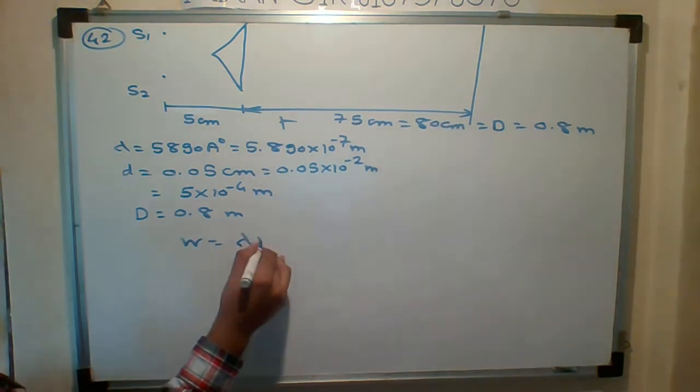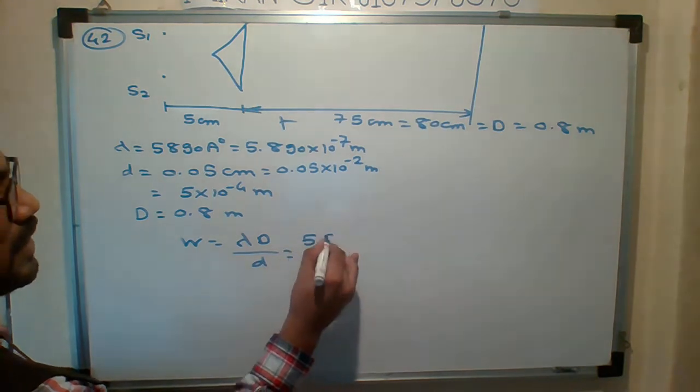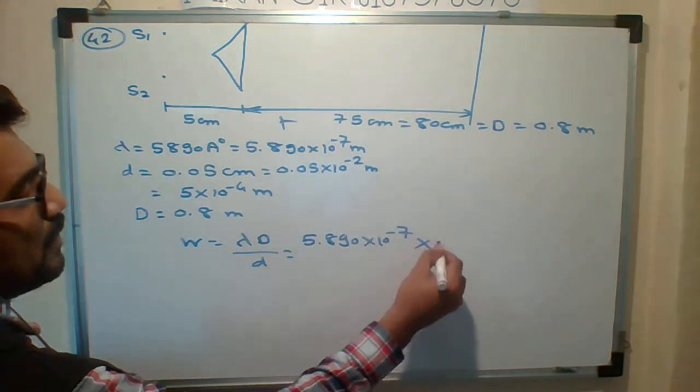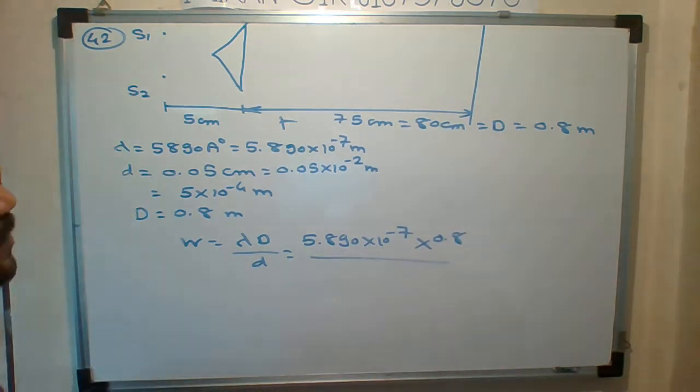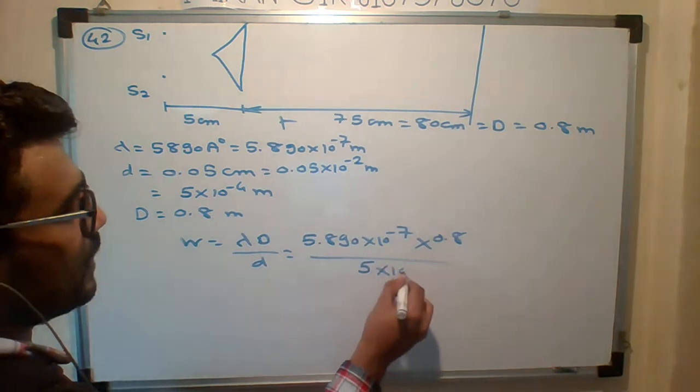So w is given by what? Lambda capital D upon small d. What is lambda? 5.890 into 10 to the minus 7. Multiply by 0.8. Divide by, what is small d? Small d is 5 into 10 to the minus 4.